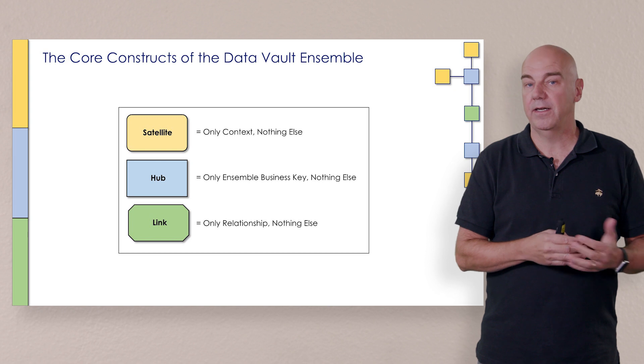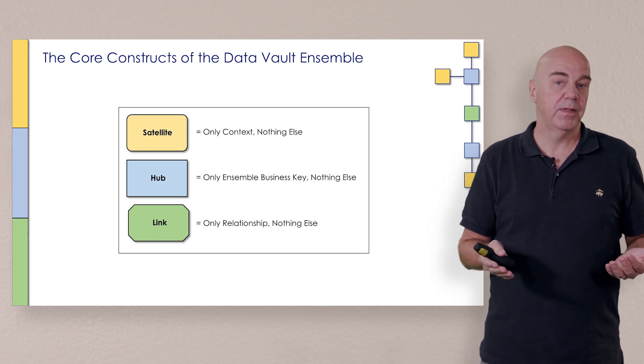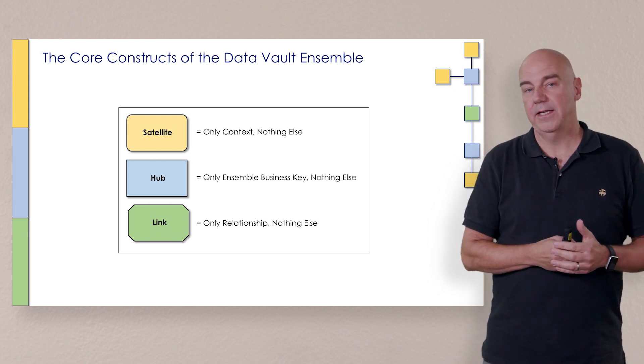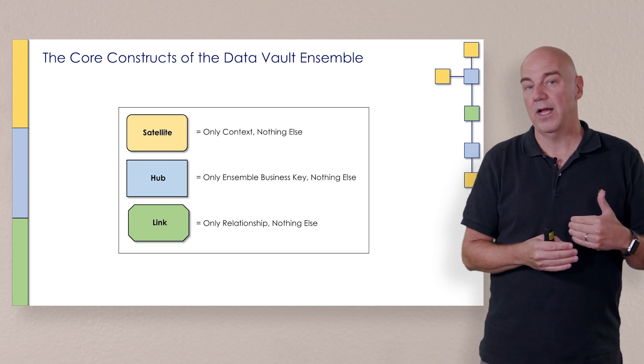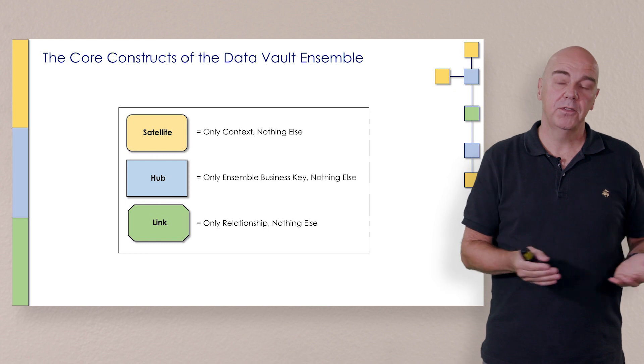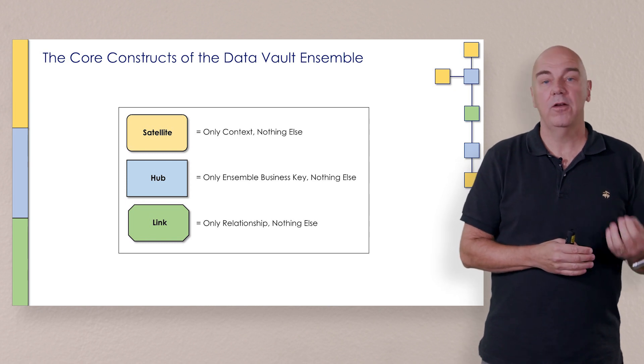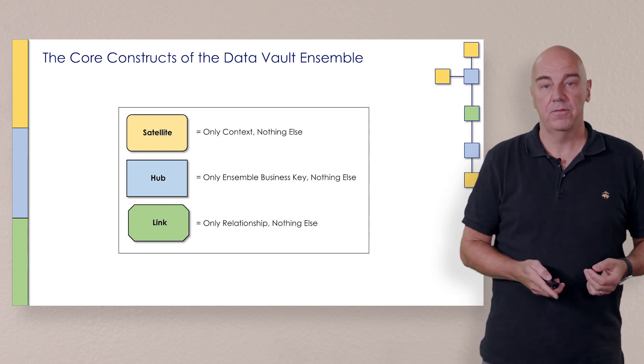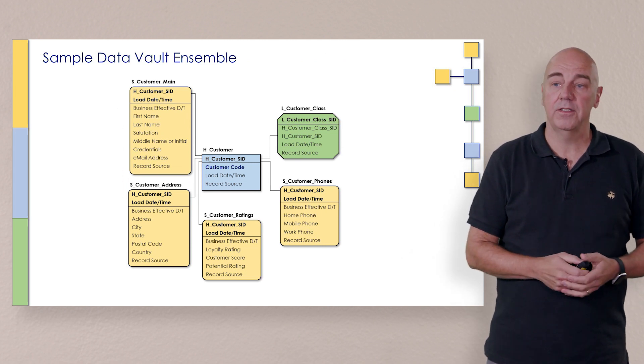And with a relationship, the link, again only the link. So we can't have anything there that describes an instance of anything. It's just the relationship. It's critical to have those pieces spread out and they only perform their singular functions.